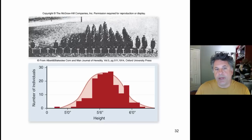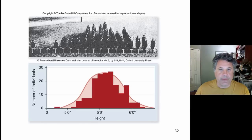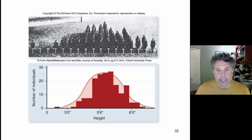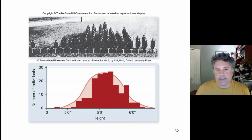We've covered Mendel's basic laws of heredity and we've correlated the behavior of Mendelian alleles with the behavior of chromosomes in their segregation to haploid gametic cells — the male cells, sperm or pollen in plants, and the female reproductive cells, eggs. But now it's time to consider some apparent but not real exceptions to Mendelian inheritance.